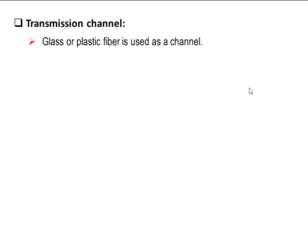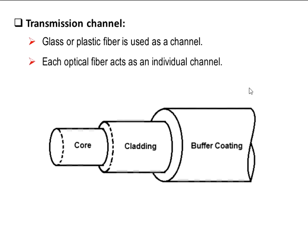The transmission channel is a path between the transmitter and receiver. In fiber optic communication, a glass or plastic fiber is used as a channel. It consists of a fiber core surrounded by fiber cladding, both of which are made of glass material. The only difference is that the core has a greater refractive index than that of the cladding. Since optical communication is point-to-point communication, one fiber is considered as one channel.